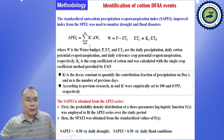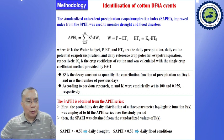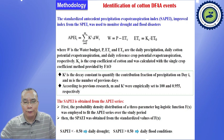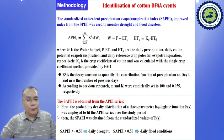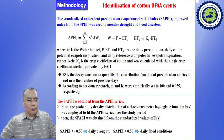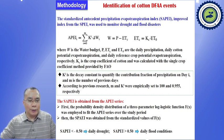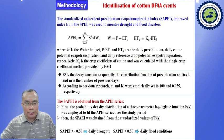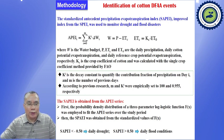For APEI, we calculate the difference of water budget daily, taking into consideration KI. KI is the decay constant to quantify the contribution fraction of precipitation on day I. It is a way to consider the daily water budget difference. The improved index SAPEI is obtained from the traditional APEI series. The probability density distribution of the three-parameter logistic function was used to fit the APEI series over the study period, and then the improved index was obtained from the standardization of this function.